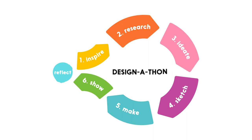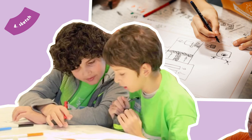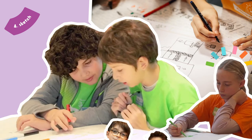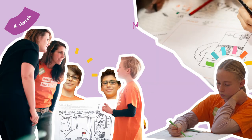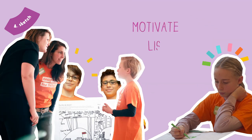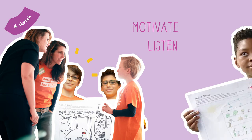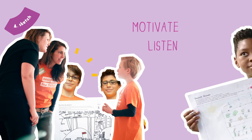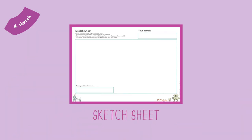Step 4: Sketch. Now the children sketch their idea on paper, showing how it works. They learn to represent their ideas visually. Your role is to motivate them and make sure the children listen to each other. A good sketch shows details and descriptions. The children can also come up with a name for their invention. Here the children use the sketch sheet.